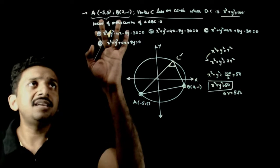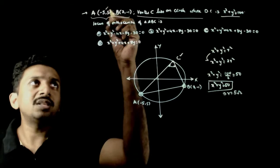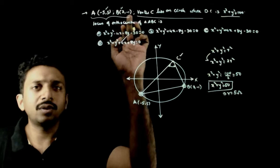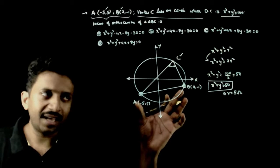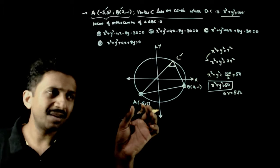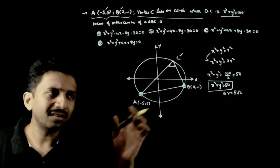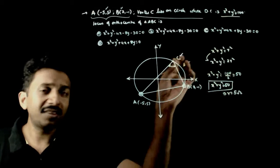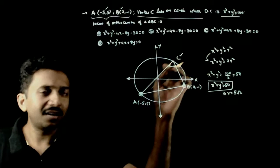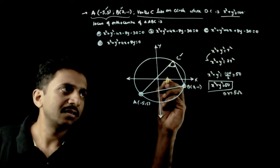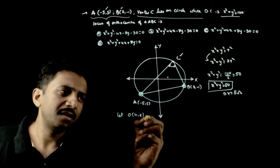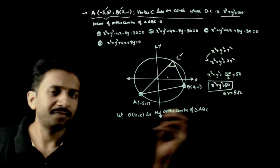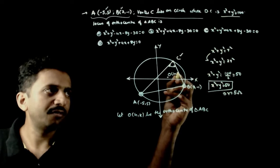C lies on this circle. But luckily, if you see the given points A and B, both these points also satisfy the equation of this circle x square plus y square is equal to 50. So A at minus 5 comma 5 and B at 7 comma minus 1 are plotted on this diagram — both are points on this circle, and the third vertex C also lies on the circle. We need to find the locus of the orthocentre of this triangle. Let H comma K be the orthocentre of triangle ABC.